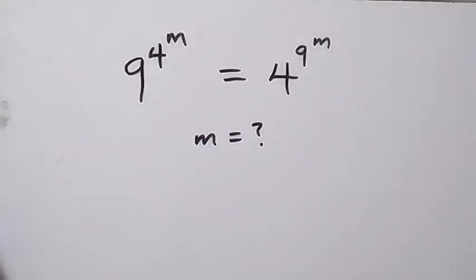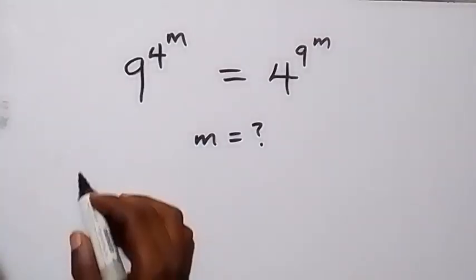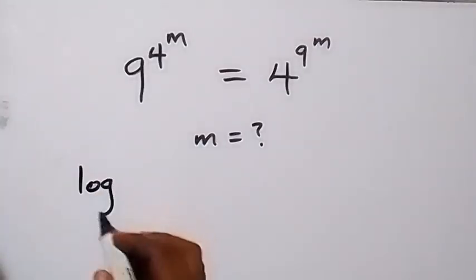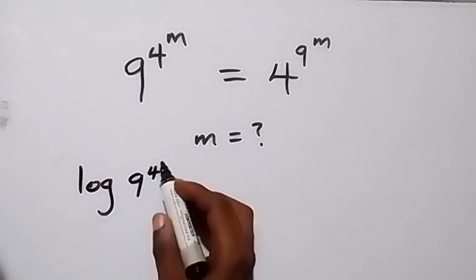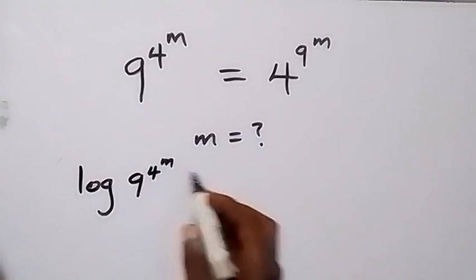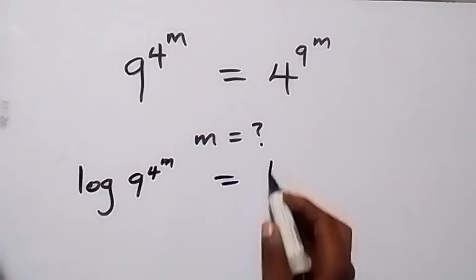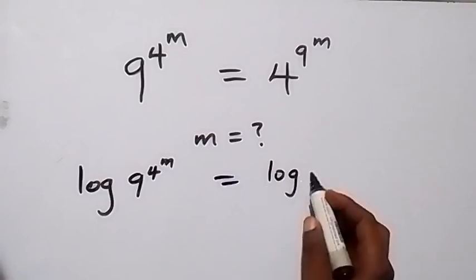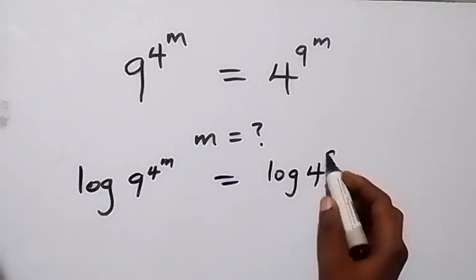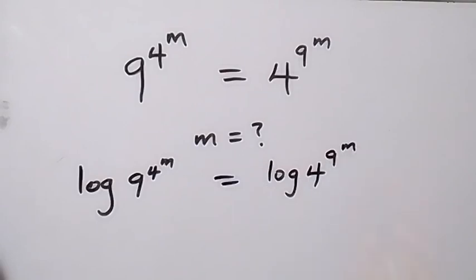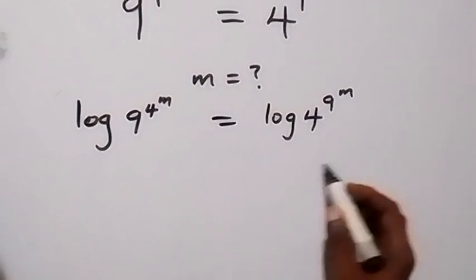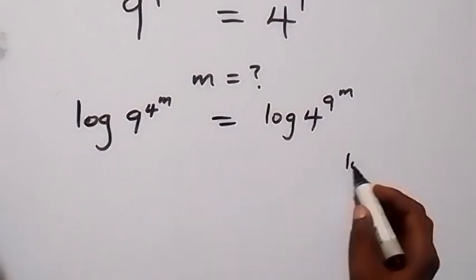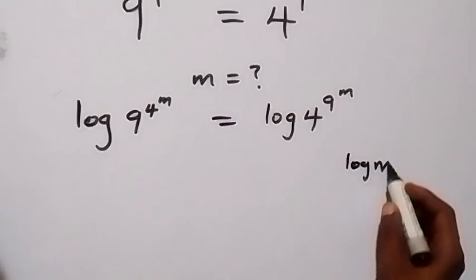Here we can take the log on both sides. This will become log of 9 raised to power 4 raised to power n, then equals to log of 4 raised to power 9 raised to power n. From the law of logarithm, we have log of n to power p is the same as p log n.